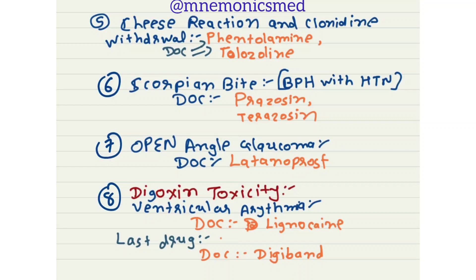For open angle glaucoma, drug of choice is latanoprost. For digoxin toxicity: for ventricular arrhythmia, drug of choice is lignocaine. If not treated by lignocaine, the last resort drug of choice is digibind.